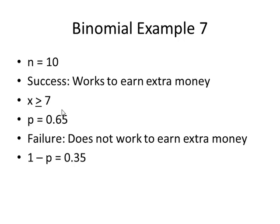StatCrunch, 10 for n, 0.65 for p, x is greater than or equal to seven. If you're working by hand, it's going to be easier to add up seven through ten than to work with the complement, which is zero through six. That's fewer times into the formula. The probability here of the answer is 0.5138.